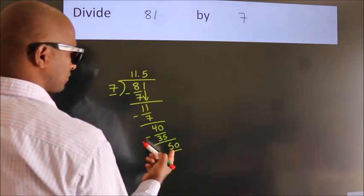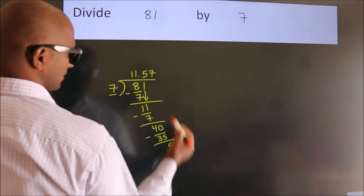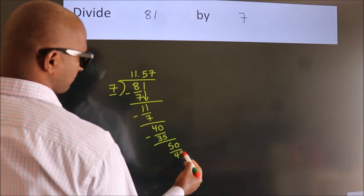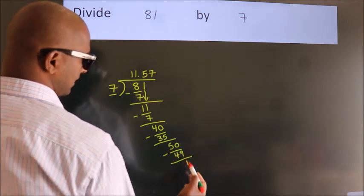A number close to 50 in the 7 table is 7 sevens, 49. Now, we subtract. We get 1.